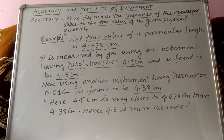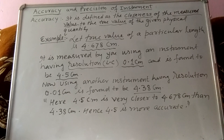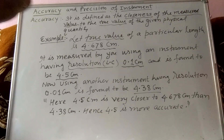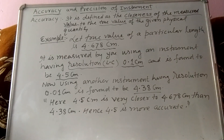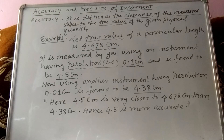Accuracy is defined as the closeness of the measured value to the true value of the given physical quantity. If any physical quantity is given — like mass, length, time — and its true value, meaning its accepted value, is given, then accuracy refers to how close your measurement is to that true value.